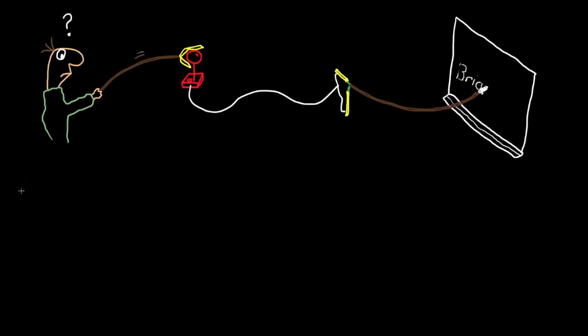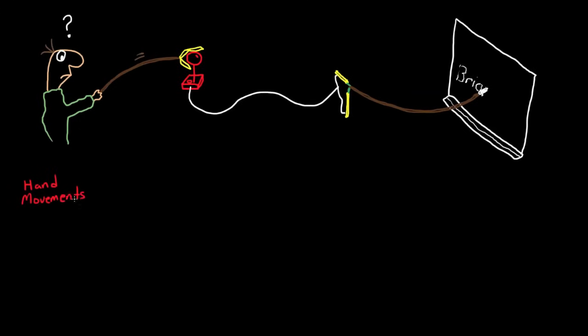If we take a simplified block diagram of this system, it might look something like this. The input into the whole system are your hand movements. This moves the first flexible stick that I'll represent right now as a black box, but start thinking of these as transfer functions. The output of this box is the position of the end of the first stick.